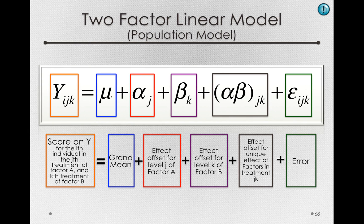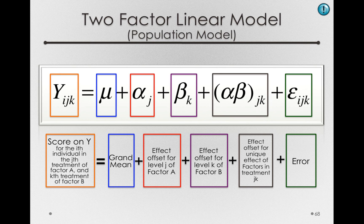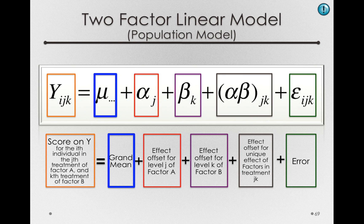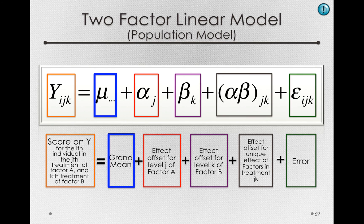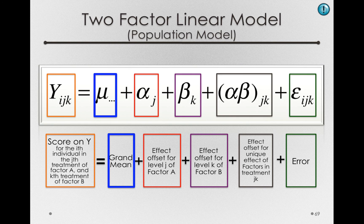Now just one final piece of bookkeeping. For the grand mean, because we're going to be discussing so many means, we have to be a little more specific. And so we'll write this as μ... to remind ourselves that this is the average over all individuals in every group of both factor A and factor B. So those dots simply remind us that we're averaging over individuals and groups.